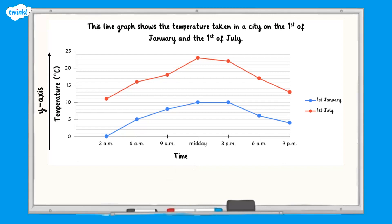The vertical axis, or y-axis, goes from top to bottom at the left of the graph. On this graph it tells us the temperature that was recorded in degrees Celsius. It is labelled in steps of 5 degrees, starting at 0 degrees and finishing at 25 degrees.